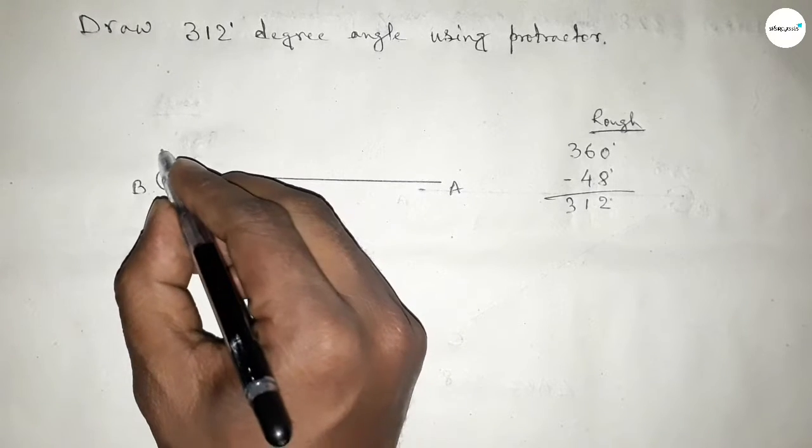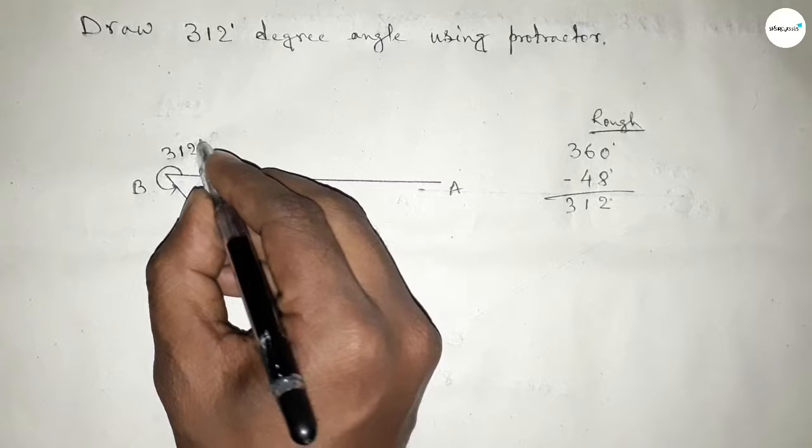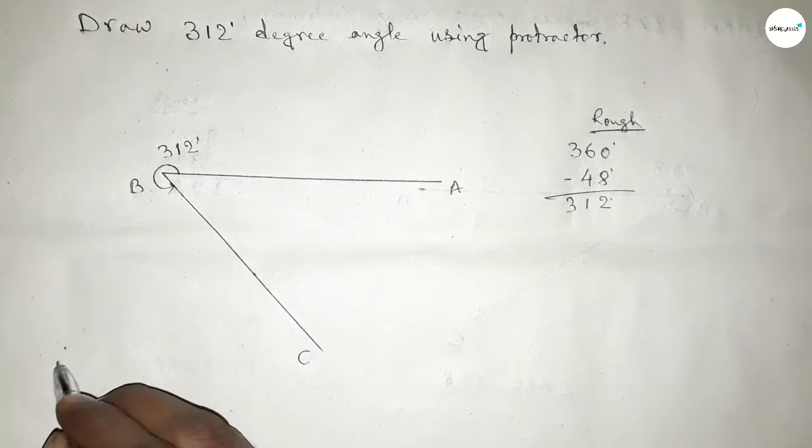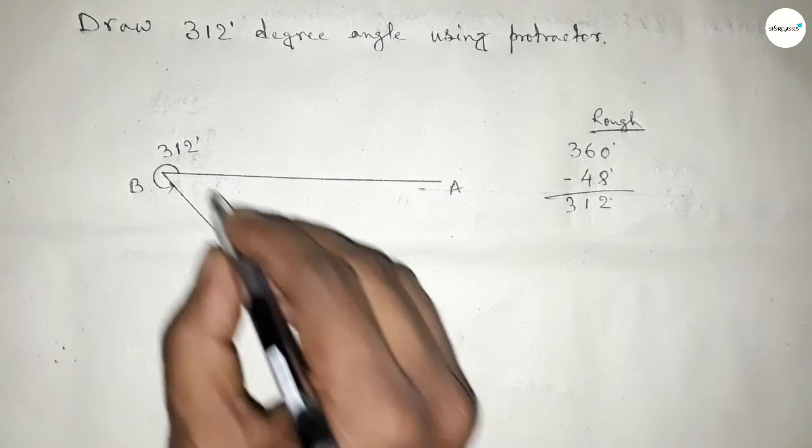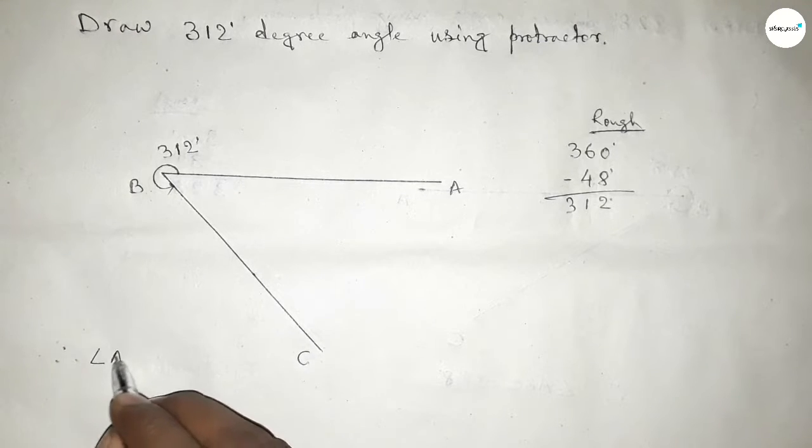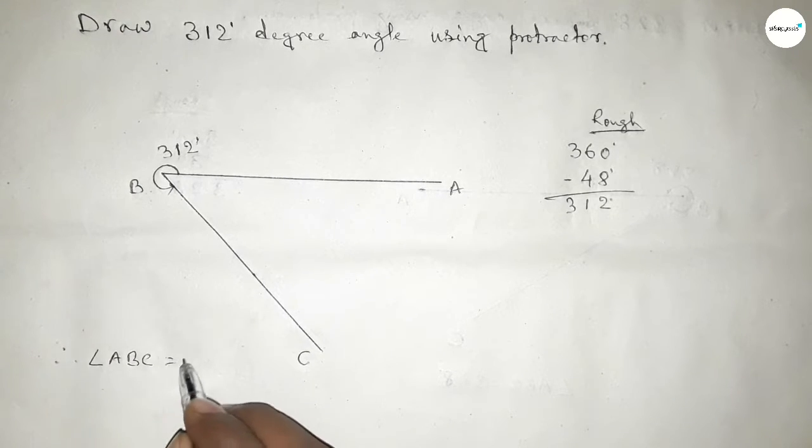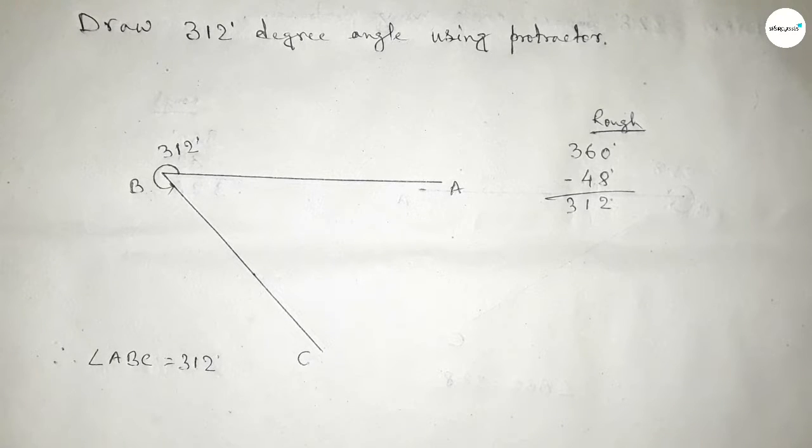So joining this side and taking here point C. So angle ABC up to this is 312 degrees. Therefore, angle ABC equals 312 degrees.